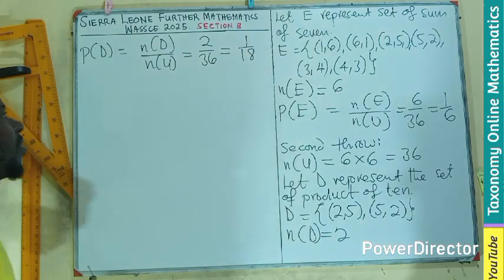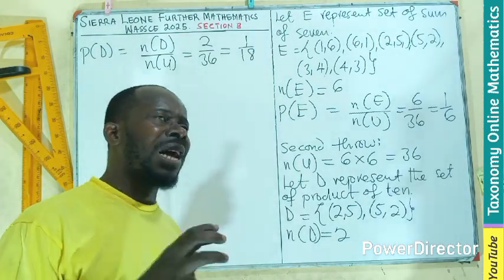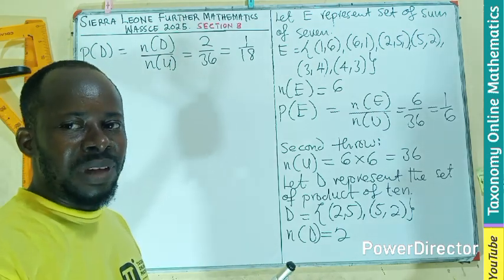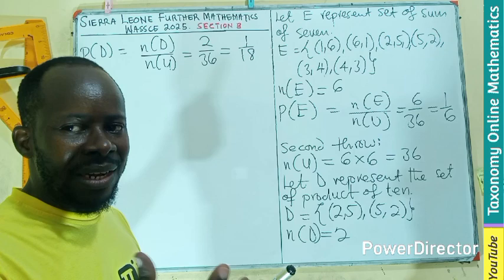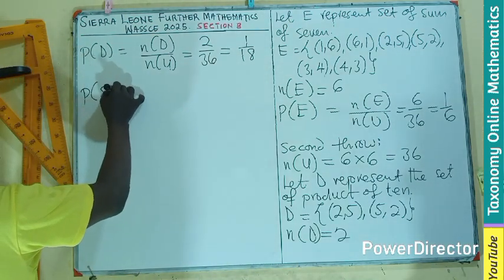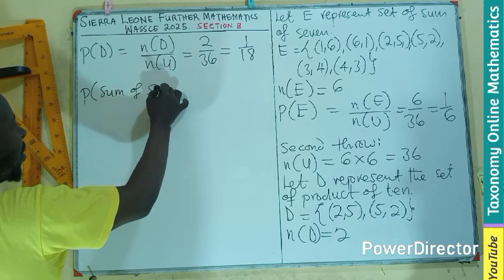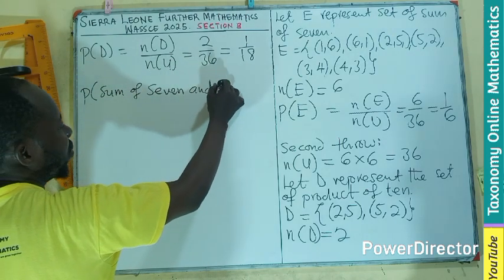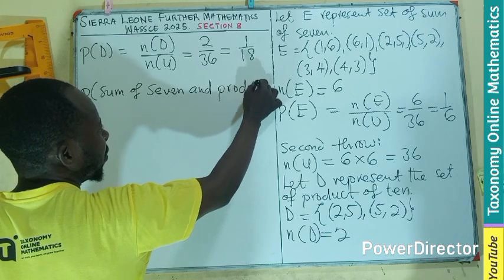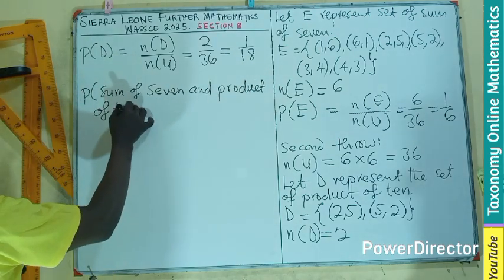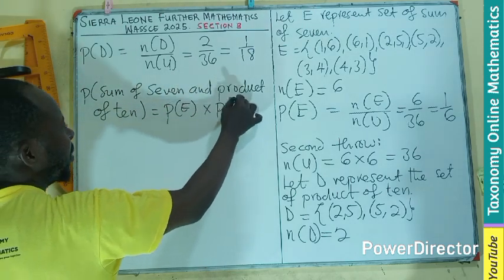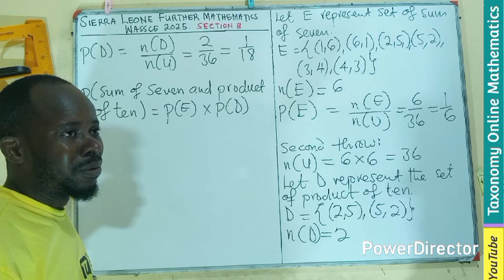If I can check, remember what the question is asking for is the probability of getting the sum of seven and the product of 10. So to find the probability of sum of seven and, which is multiplication, so product of 10, this means that probability of E times probability of D, as in terms of AND, which is multiplication.